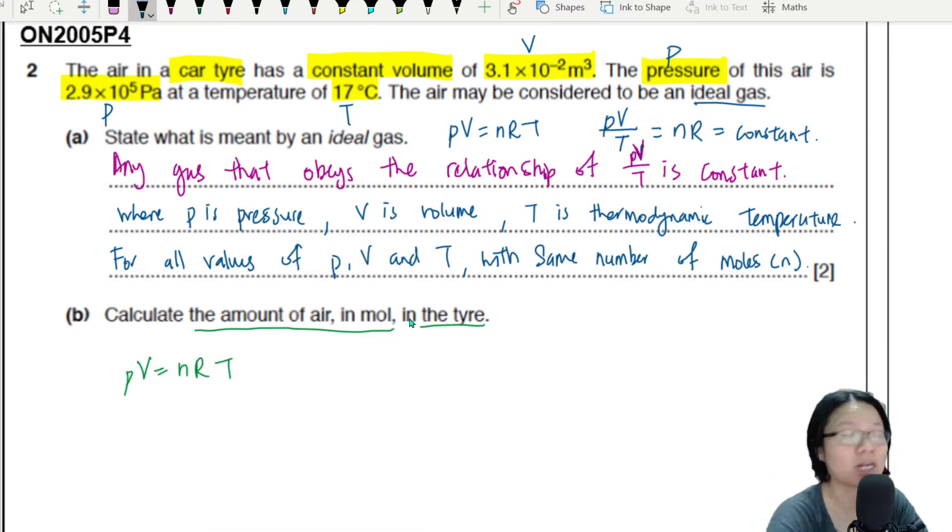Okay, let's harvest the values we have. P: 2.9 times 10 to the power of 5 pascal. We're checking for units every step of the way. V is 3.1 times 10 to the power of negative 2...